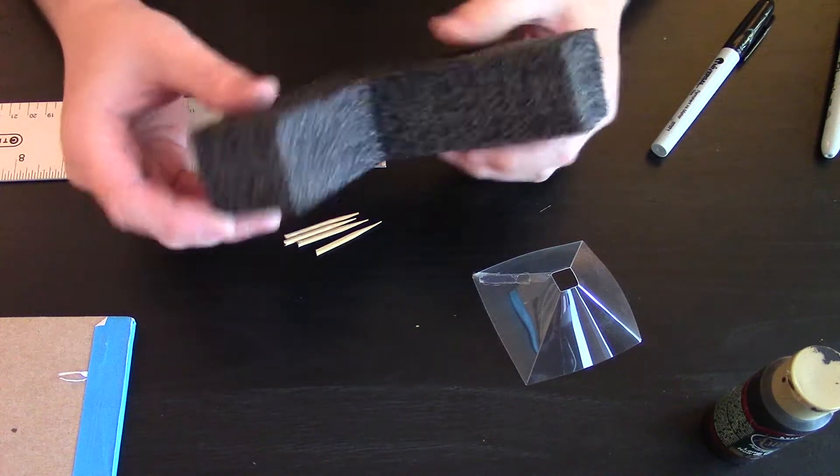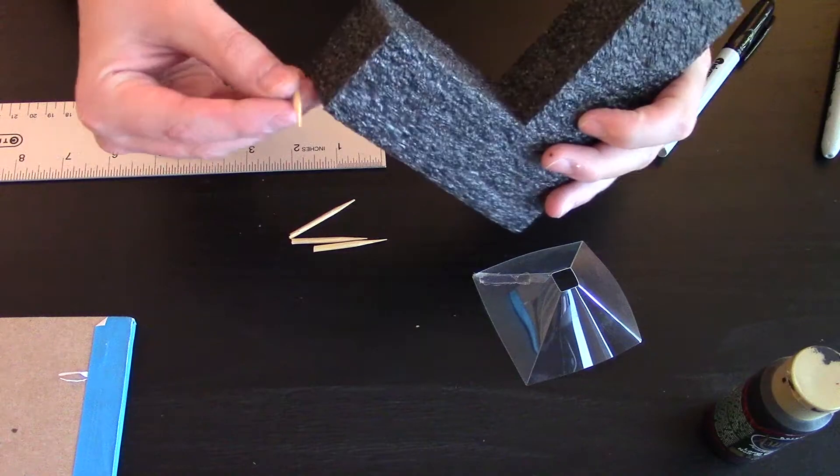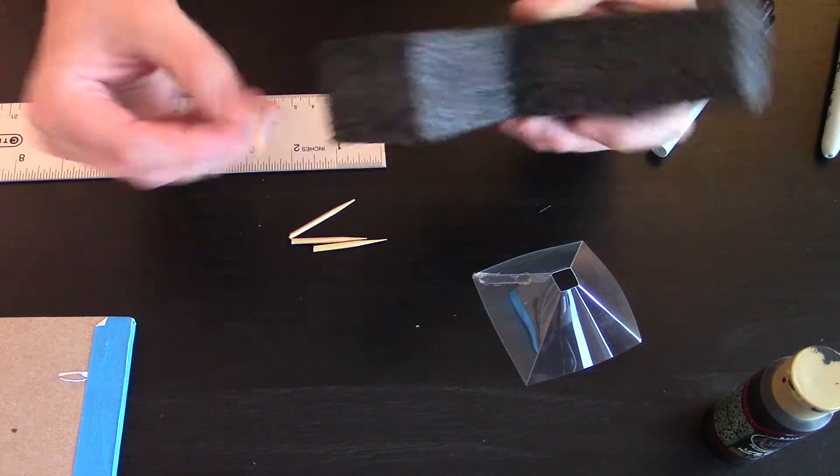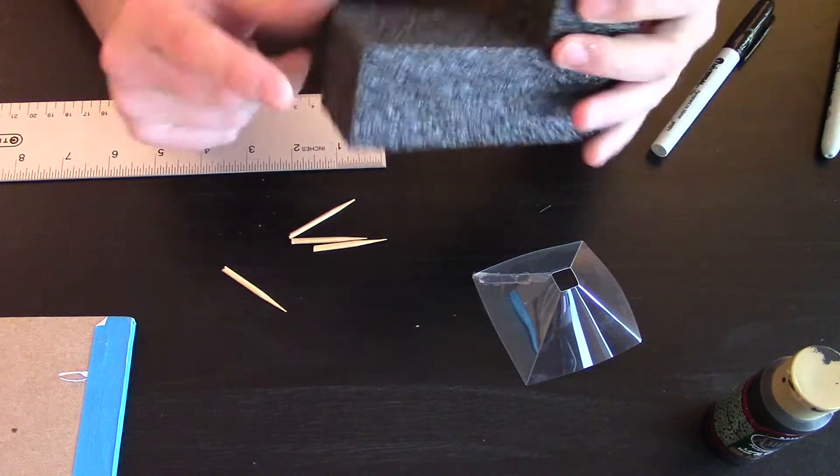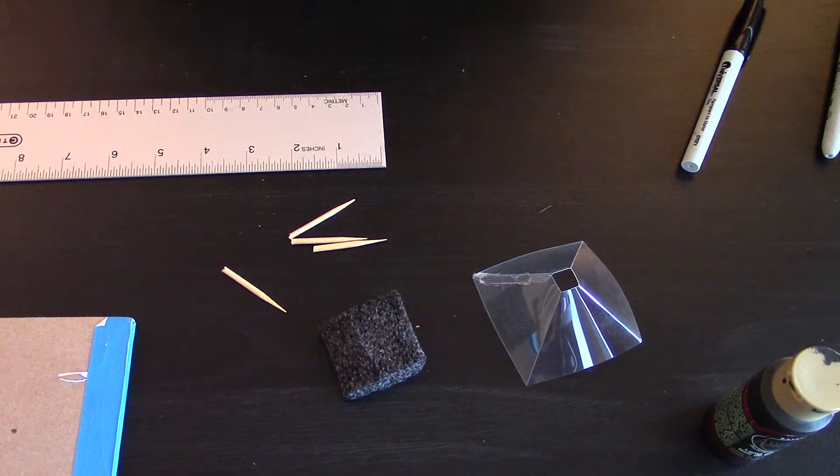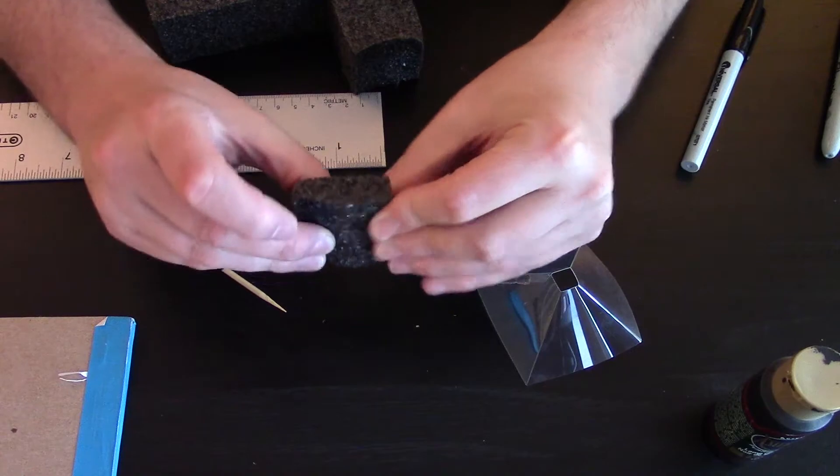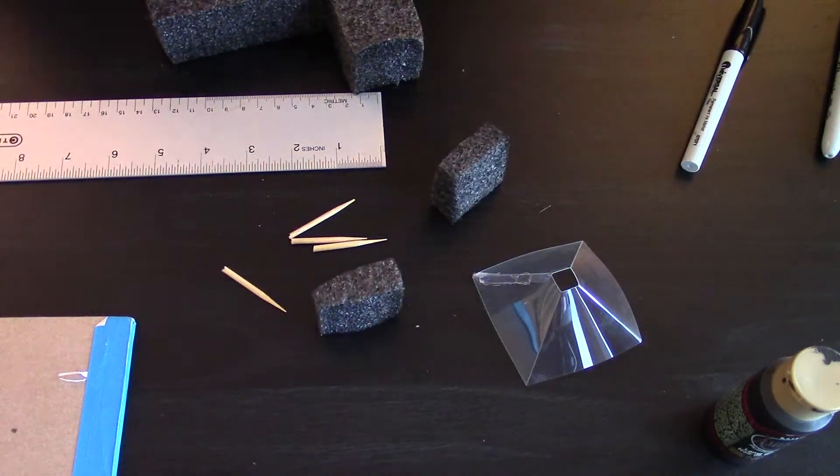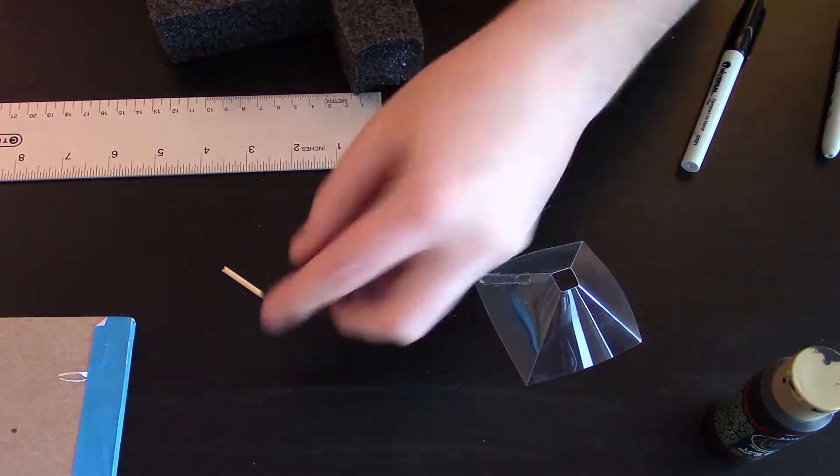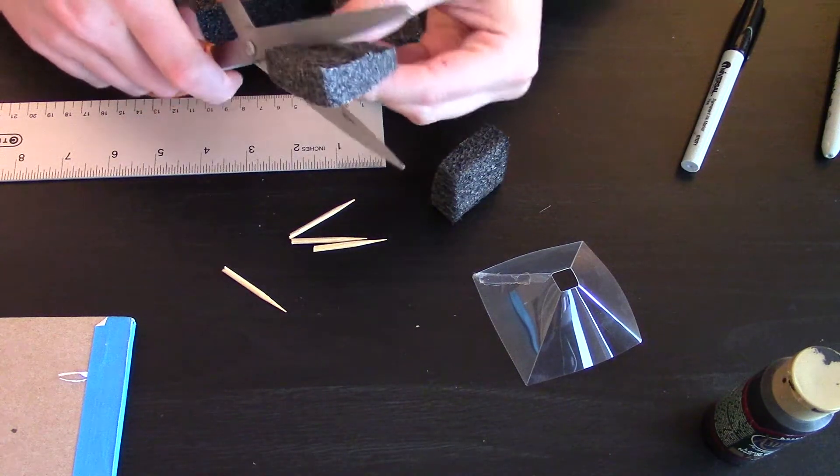So I'm going to take this foam. Now the cool thing about this foam is it's actually about that same length. So I'm going to cut some pieces. They don't have to be perfect for the sake of the tutorial but you want four square pieces here. So let's just go ahead and do that.